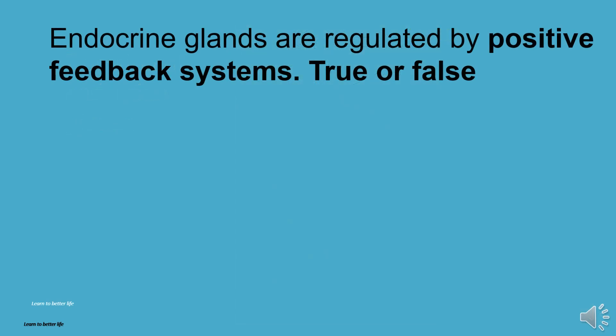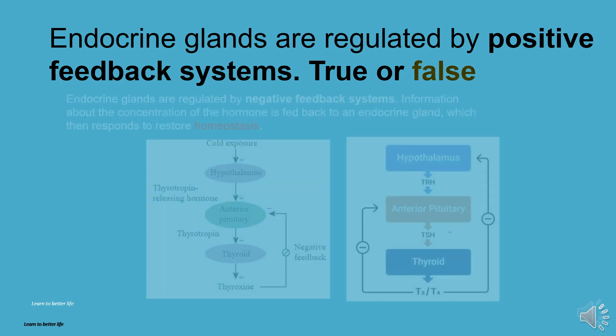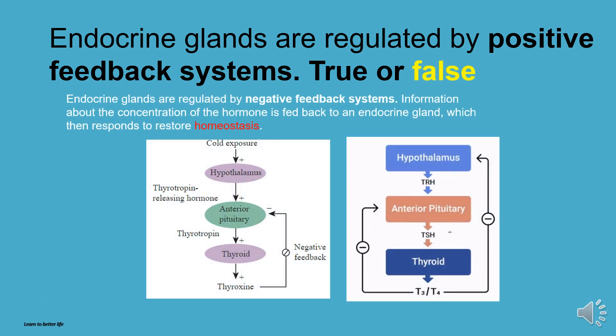Endocrine glands are regulated by positive feedback systems. True or false? The answer is false.